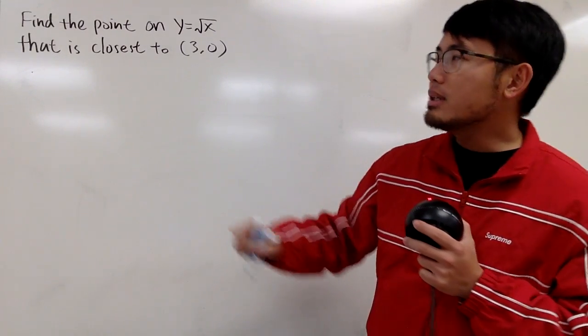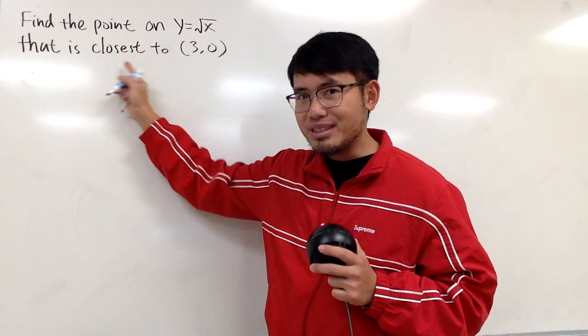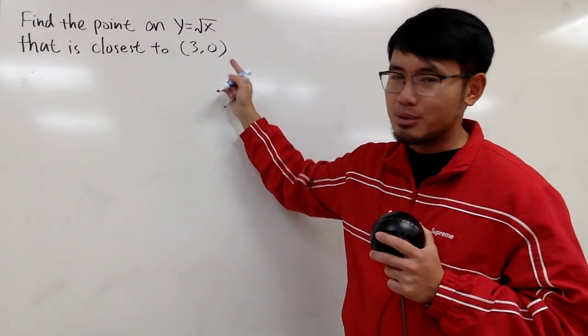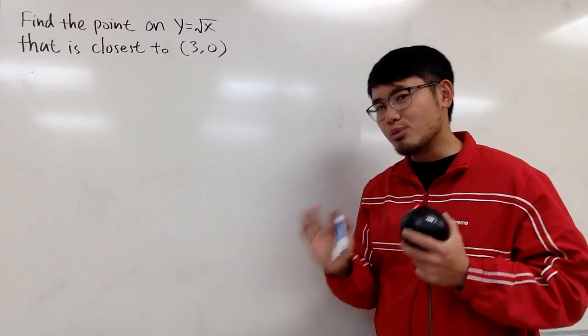Okay, in this video, we are going to find the point on the curve y equals square root of x that has the shortest distance to the point 3, 0. Of course, this word means shortest distance, so you have to remember you're trying to get the minimum or the maximum in this kind of problem.